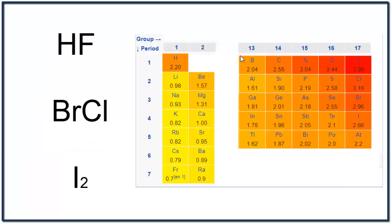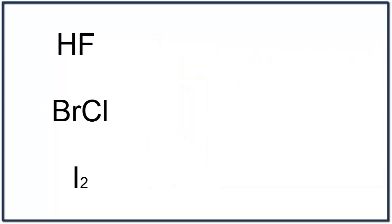Pause and take a moment to figure out if each one of these molecules is polar or nonpolar. For HF, we have a difference of 1.78, meaning this is going to be a very polar molecule, with those shared electrons spending most of their time around the fluorine atom.